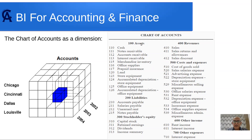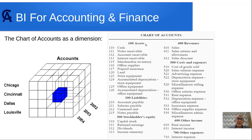When I drill down on the 'Assets' account, I see the details of how much is in every account. When I roll up, I sum all the accounts and get the total assets. Roll-up is looking from the detail to the account that sums up those accounts, and when I drill down I look at the detail of that account.